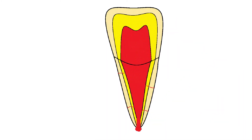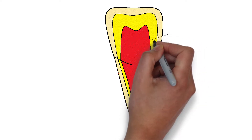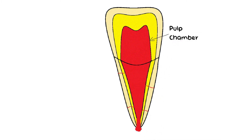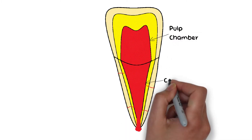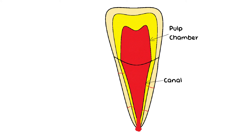The inside of the tooth is also subdivided into two portions. The portion that corresponds to the crown of the tooth is known as the pulp chamber, and the portion that corresponds to the root of the tooth is known as the canal. The pulp present inside the chamber is known as the coronal pulp, while the pulp present inside the canals is known as the radicular pulp.